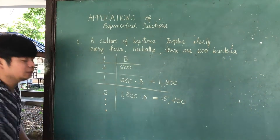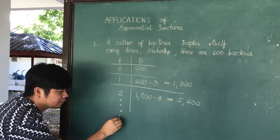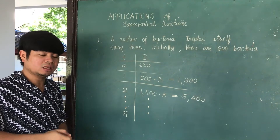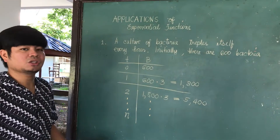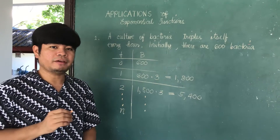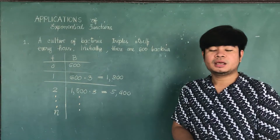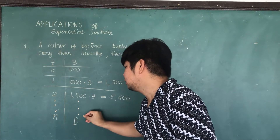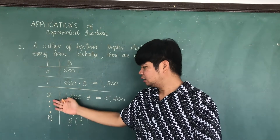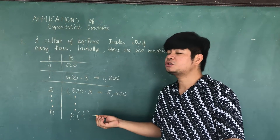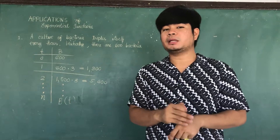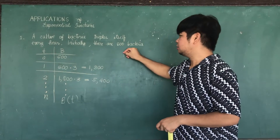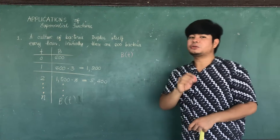What if time keeps increasing for n number of hours? What would happen to the number of bacteria in the culture? This illustrates exponential functions. So let us first model the equation — the function representing the increase in the number of bacteria. The amount of bacteria after t hours is represented by B of t.